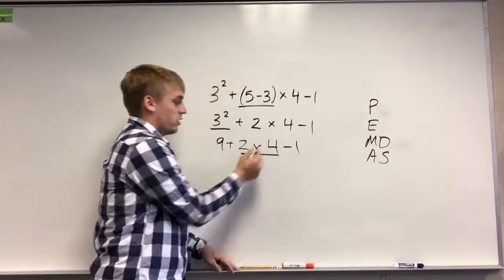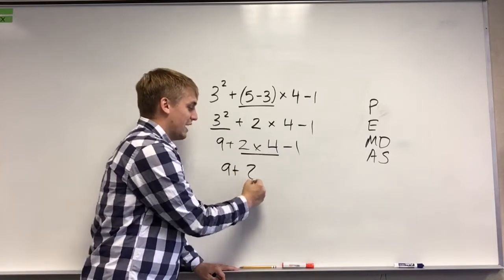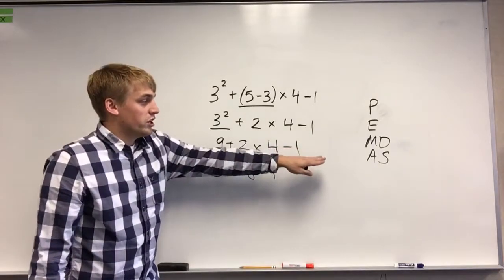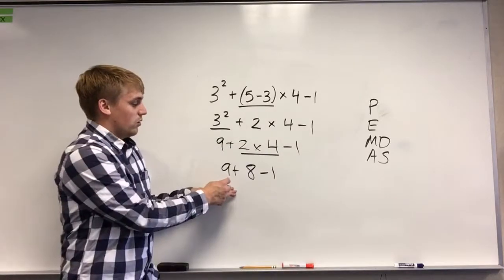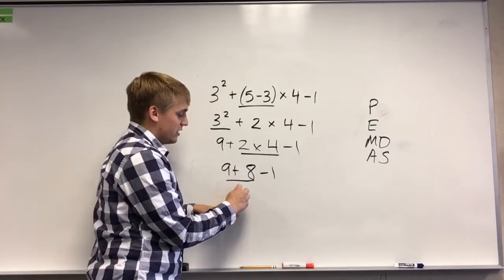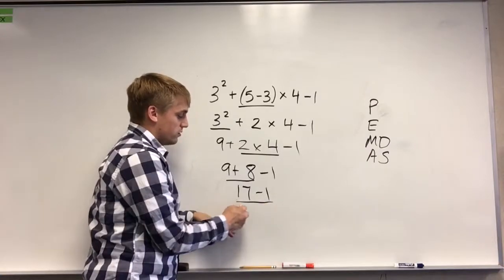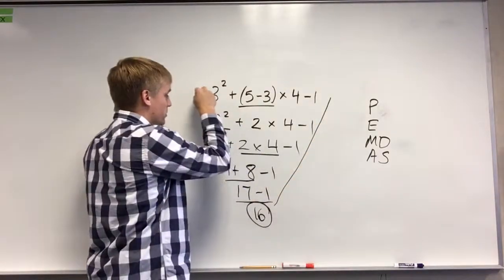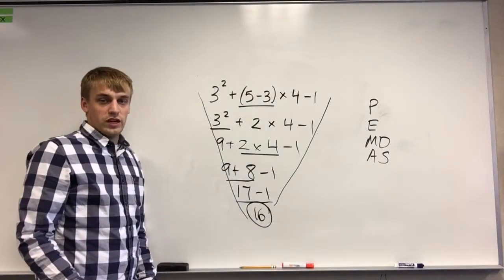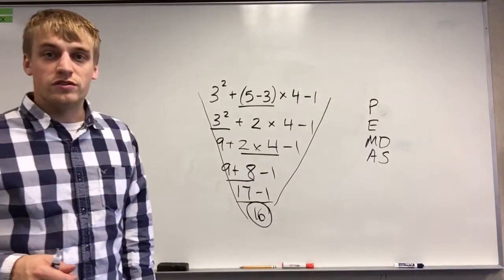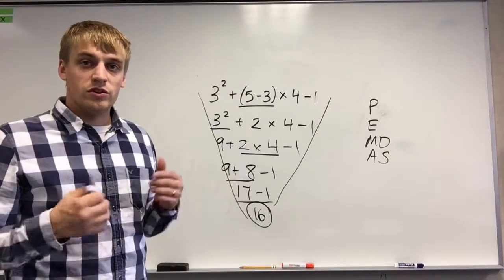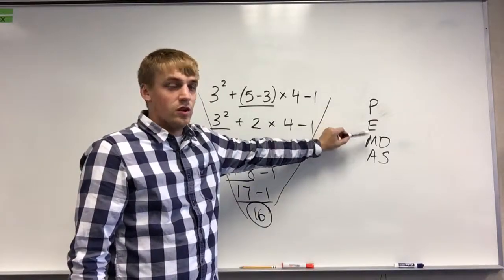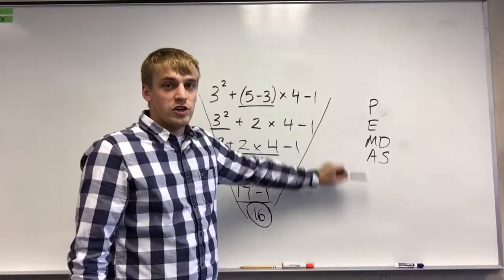We have multiplication: 2 times 4 is 8. So we get 9 plus 8, then bring down minus 1. No multiplication or division left, so we add or subtract: 9 plus 8 is 17, bring down minus 1. 17 minus 1 is 16, so our answer is 16. Notice the work funnels down to the answer — that's what your work should look like. When doing problems with multiple operations, always remember PEMDAS: parentheses, exponents, multiply or divide, add or subtract, from left to right.